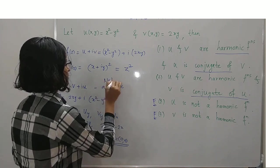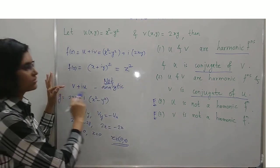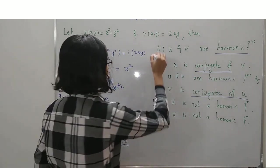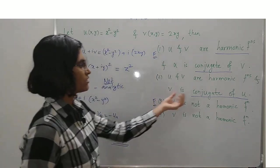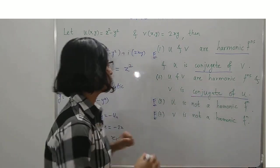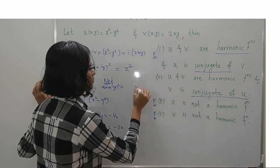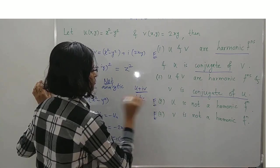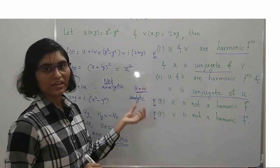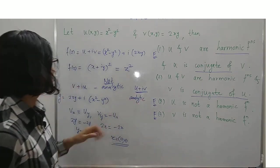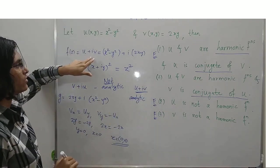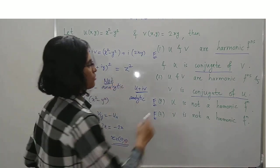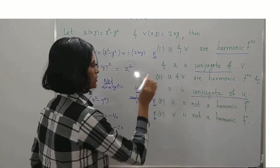The CR equations are satisfied only at (0, 0), not for all x, y. Therefore this function is not analytic, so u is not a conjugate of v — option 1 is false. But u + iv = z² is analytic, so v is a conjugate of u. Hence the correct option is the second option.